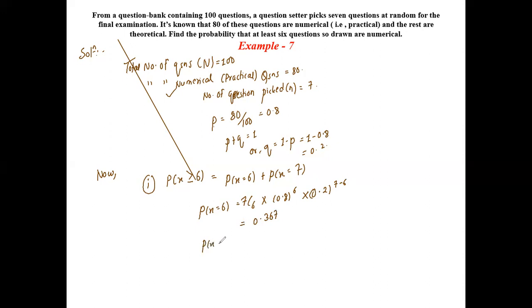Now we have total probability of X is greater than or equal to 6. Hence the probability that at least six questions are numerical is 0.577. So thank you so much.